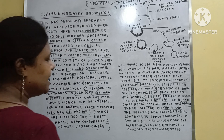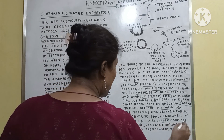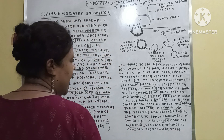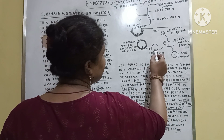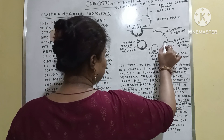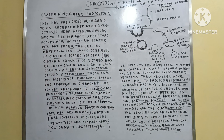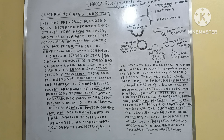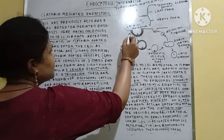The vesicles then deliver their contents to the early endosomes. In low pH conditions, LDL is released from its receptor via late endosomes, and the lysosomes degrade the LDL content. The receptor moves back to the plasma membrane. This is the endocytosis process of the plasma membrane, facilitated by the clathrin molecule, using LDL and the LDL receptor as an example.